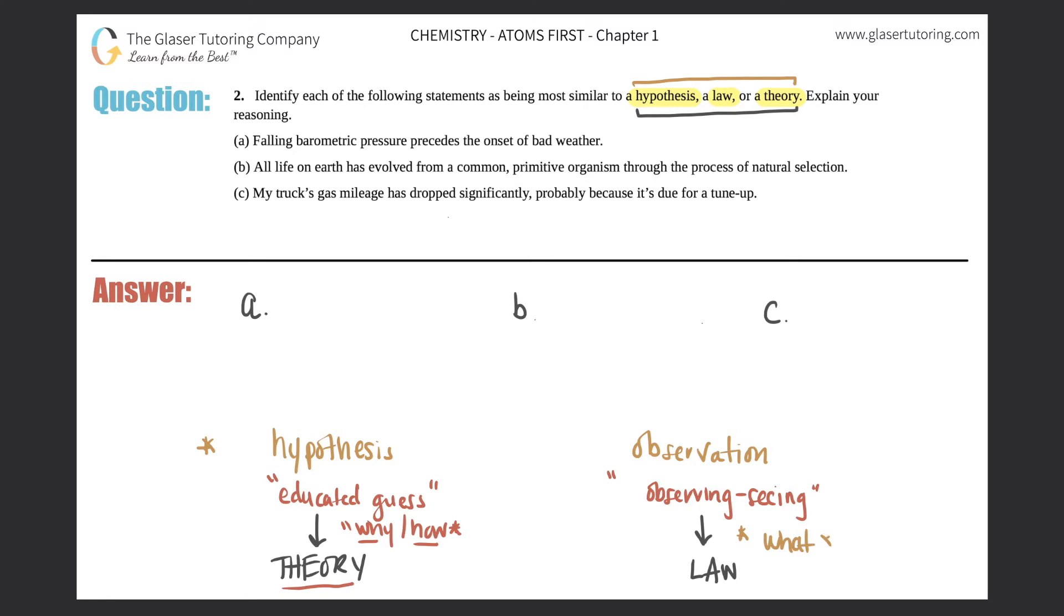On the other hand, if the question is 'what is happening,' that's going to be observation or a law. So what's happening? Oh, it's raining outside. What's going on outside? It's raining. That's observation. You're actually seeing something, and if it happens over and over and over again, it turns into a law.